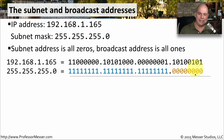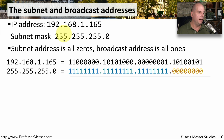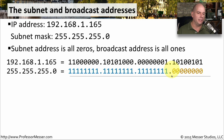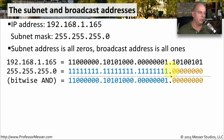Let's look at this scenario: 192.168.1.165 is a host on a network with a subnet mask of 255.255.255.0. The first thing we'll do is calculate what the network address might be, setting all host bits to 0, using a function called a bitwise AND.